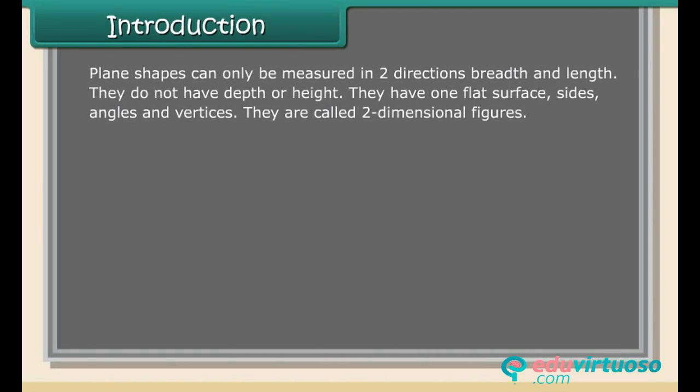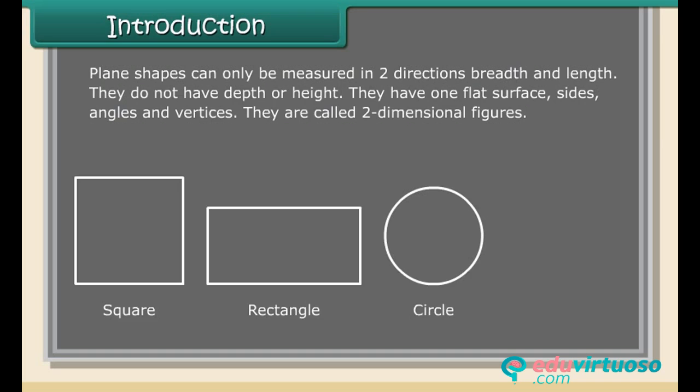Introduction: Plane shapes can only be measured in two directions, breadth and length. They do not have depth or height. They have one flat surface, sides, angles, and vertices. They are called two-dimensional figures, such as square, rectangle, circle, and triangle.